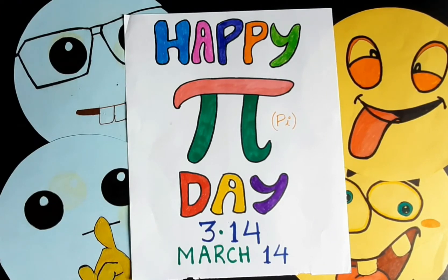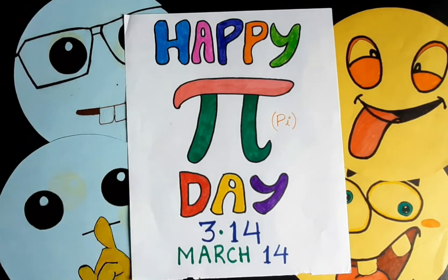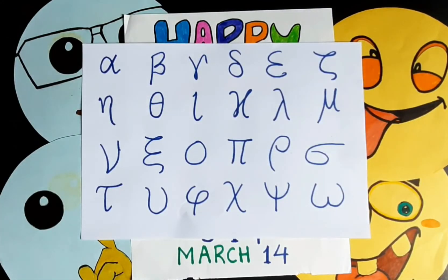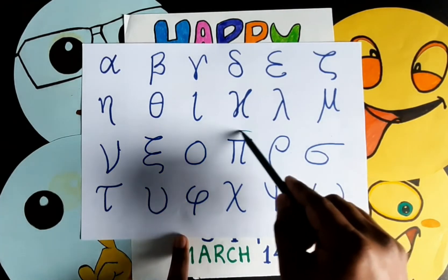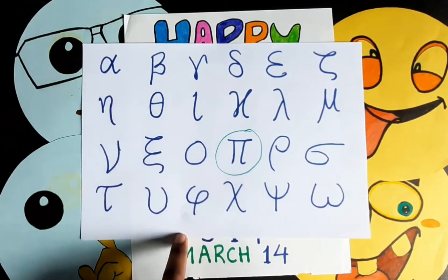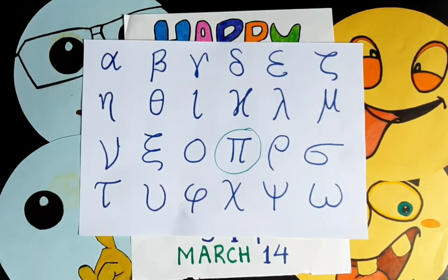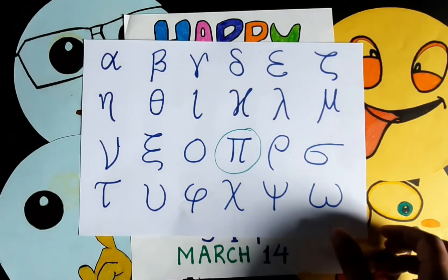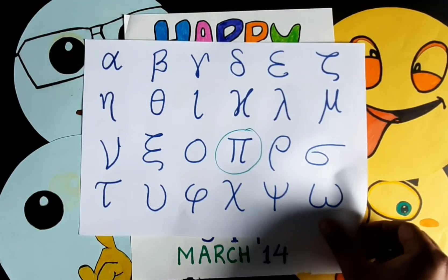First of all, what is Pi? Actually, Pi is the 16th letter from the Greek alphabet. So Pi is nothing but the 16th letter from the Greek alphabet, and this is how it came to be used in mathematics.